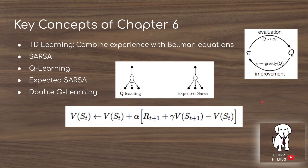Chapter five introduced the idea of model-free reinforcement learning, where we use Monte Carlo sampling to estimate the value function of a given state based on the returns we achieve after visiting that state. In chapter six, we're looking at temporal difference learning, where we combine learning from sampled experience with the Bellman equations. The Bellman equations allow us to estimate the value of the current state based on the values of states we reach after taking certain actions, shown in backup diagrams.